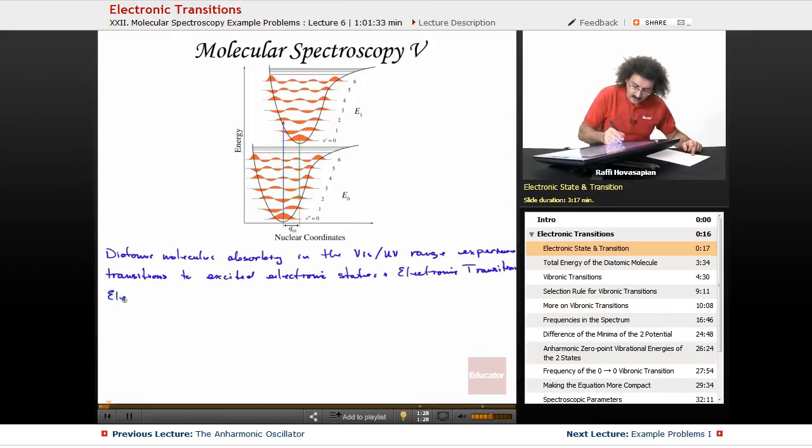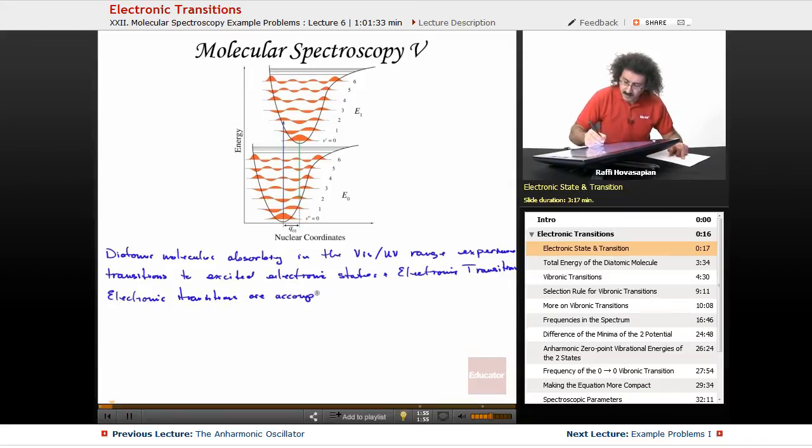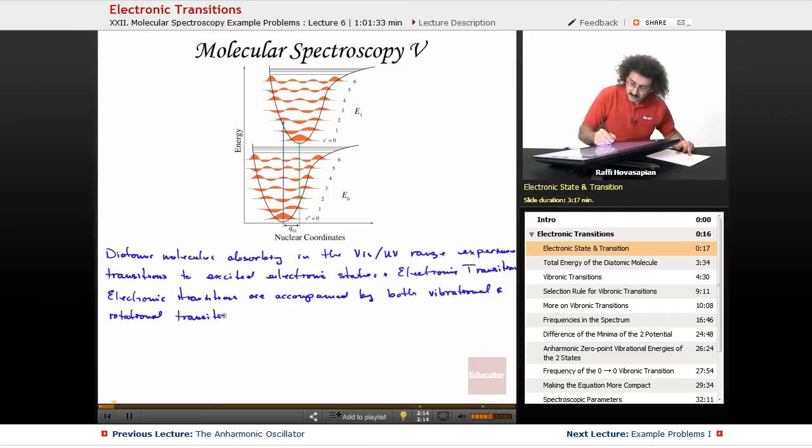Now, electronic transitions, do you remember when we did vibrational transitions? We had just those rotational transitions in the microwave range. In the infrared range, we had vibrational transitions, but with the vibrational, you've got the rotational also. With electronic transitions, you get the vibrational and the rotational also. So electronic transitions are accompanied by both vibrational and rotational transitions.